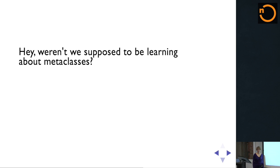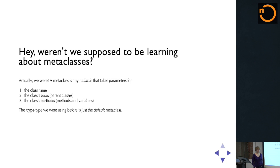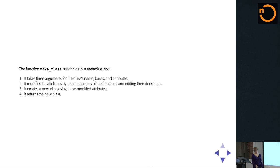You might be wondering why I haven't mentioned metaclasses in a while given that this is a talk on metaclasses. But actually the whole time I've been talking about metaclasses. A metaclass is just any callable — a function or a class that has a __call__ method. Technically a metaclass uses __new__, but anyways — it's any callable that takes the parameters for the class's name, the class's bases, and the class's attributes. So 'type', which we were using to create classes, is just basically the default metaclass. The makeClass function is technically a metaclass too — it takes name, bases, and attributes, modifies those attributes by creating copies of the functions and modifying their docstrings, then creates a new class using these modified attributes and returns it.